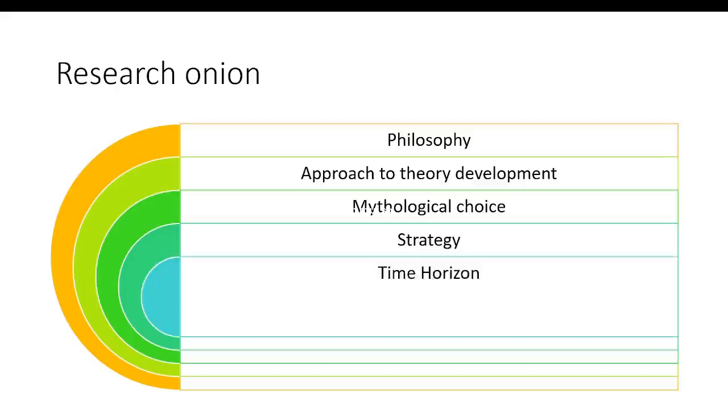Moving on, time horizon. The two major choices we have in time horizon are cross-sectional data collection or longitudinal data collection. What does it mean by cross-sectional? It means that at one point in time you're collecting data from different people or different subjects.